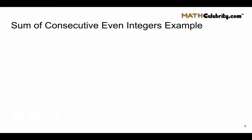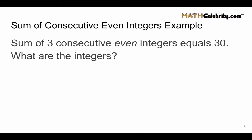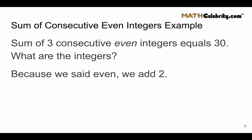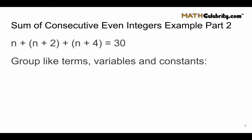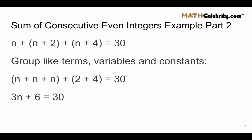Let's walk through another problem, but this time we'll throw in the even-odd twist. The problem says: the sum of three consecutive even integers equals 30 — what are the integers? This problem is worded exactly the same as the first one, but it asks for even integers. Because we said the word even, we're going to add 2 to each consecutive integer: we start with n, then n plus 2, and finally n plus 4. We add those up and they equal 30, then group like terms to get 3n plus 6 equals 30.